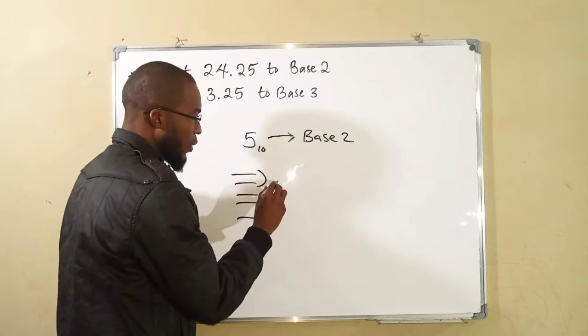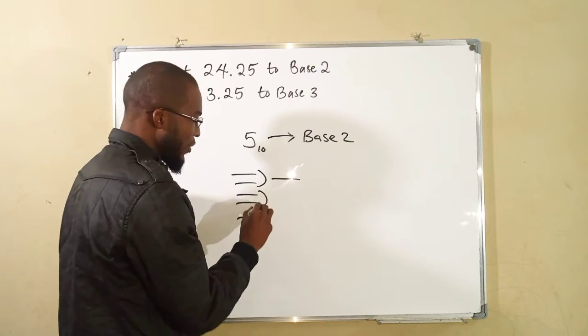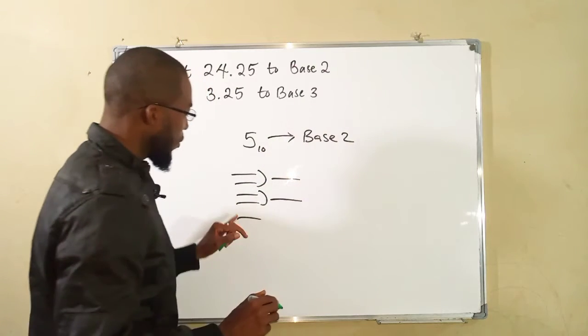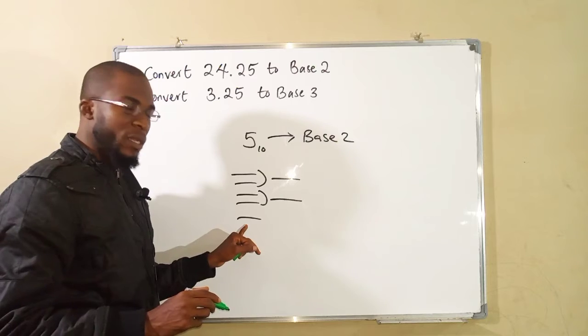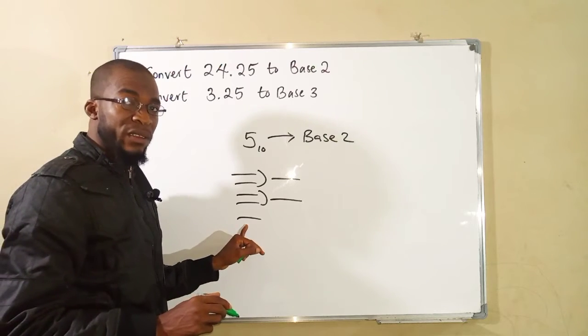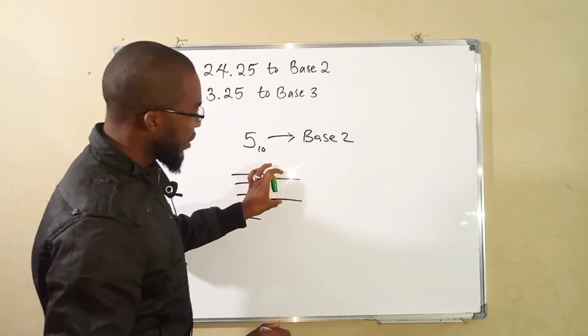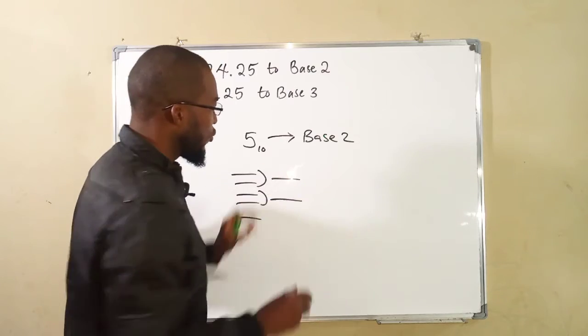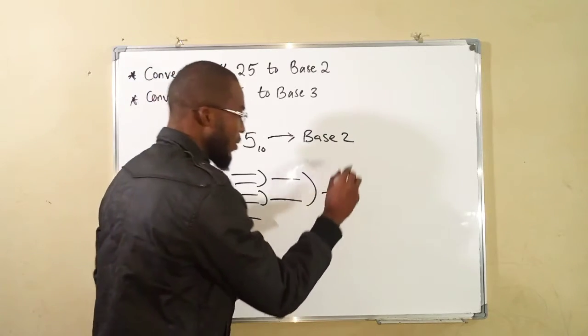Every 2 forms a bundle. Every 2 forms a bundle. But this one does not contain a partner. So we consider it as a remainder. But this is a complete bundle because there are 2. They equally form 1.